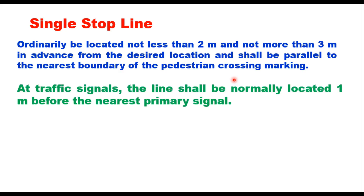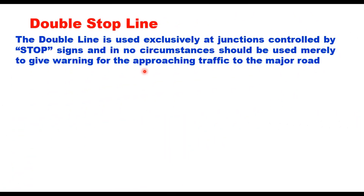At traffic signals, the stop line shall be normally located 1 meter before the nearest primary signal. The double stop line is used exclusively at junctions controlled by stop signs and in no circumstances should be used merely to give warning to approaching traffic to the major road.